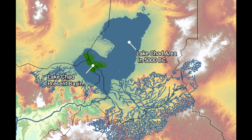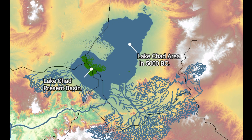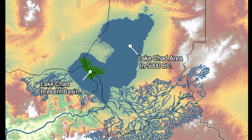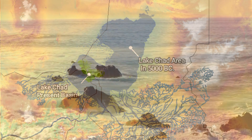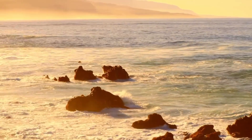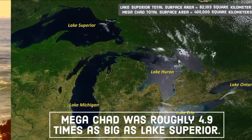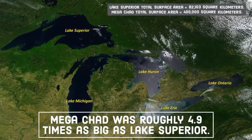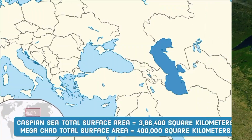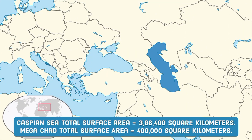Lake Chad is considered the remnant of a large inland sea, a paleolake referred to as Megachad, which existed around 5,000 BC. Covering more than 400,000 square kilometers at its peak, Megachad was roughly 4.9 times as big as Lake Superior, or slightly larger than the Caspian Sea, the biggest lake on Earth today.